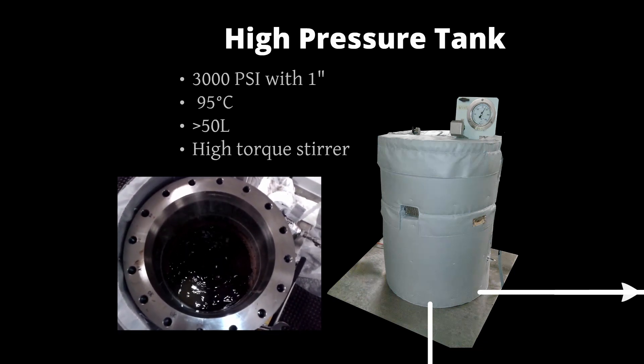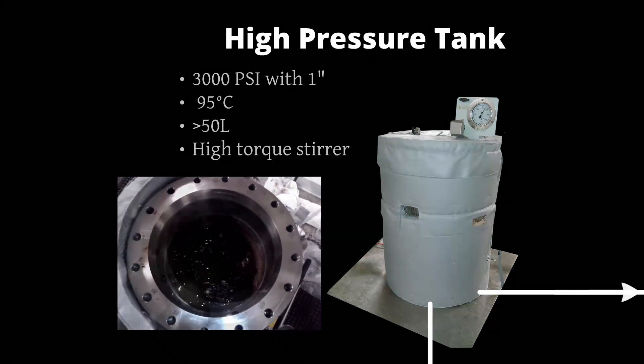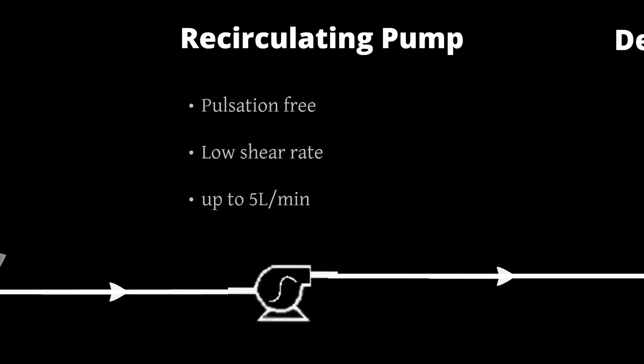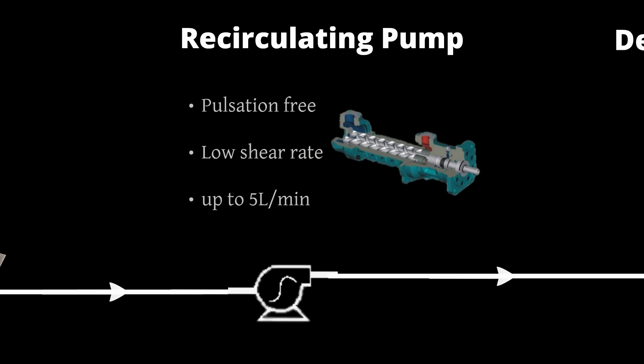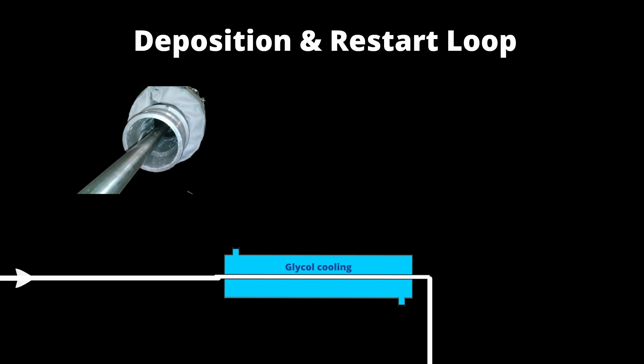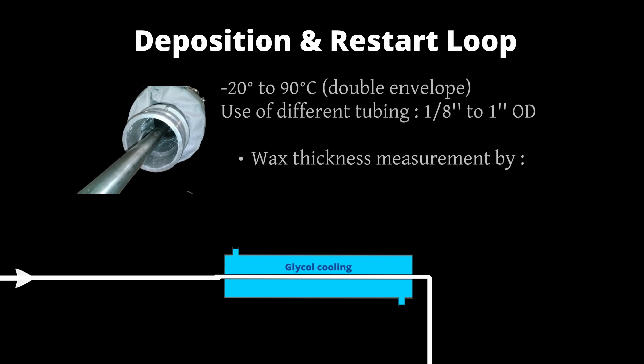A variable speed stirrer maintains the oil homogenous and at a constant temperature. The tank is equipped with electrical heater with two temperature probes. Then the oil is recirculated with a low shear pump. Thanks to the pulsation-free technology of our pump and high pressure flow meter, the oil flow rate is controlled easily with accuracy. The pumps and the lines are also heated. The test section consists of a deposition pipe for the oil with an external jacket for temperature control with water-glycol mixture.